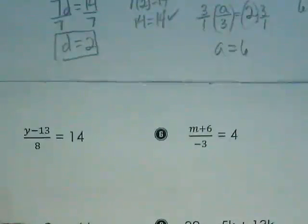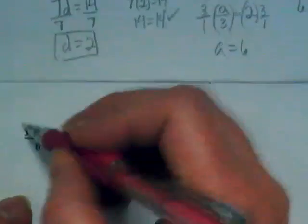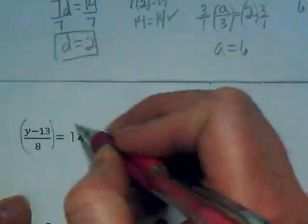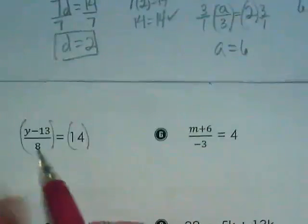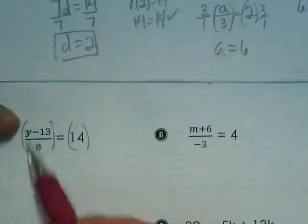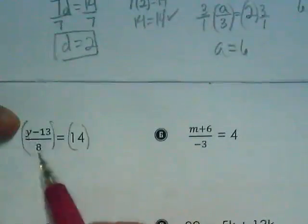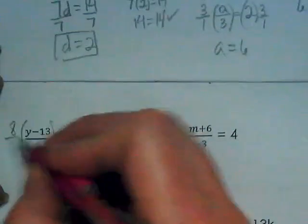So in this case, our first step is going to be to clear the denominator. And we are going to multiply by the reciprocal of the 1 over the 1 before the y and the 8. So we're going to multiply this by 8 over 1.